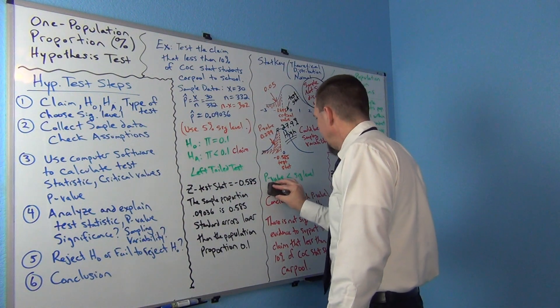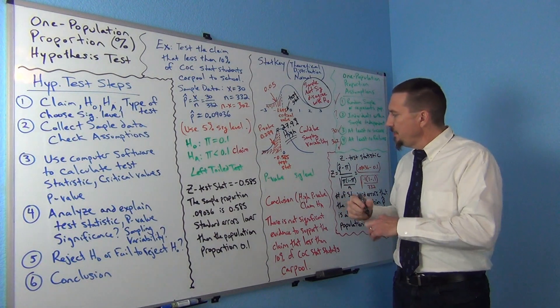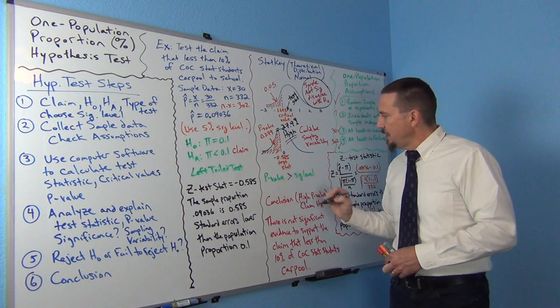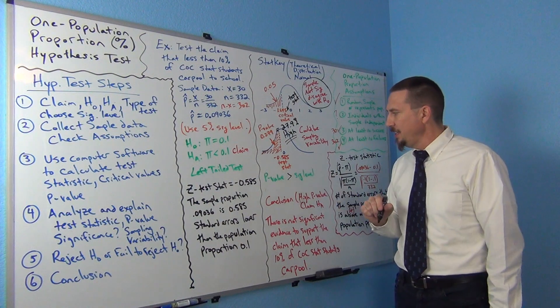Okay, so what do we see here? Our p-value is greater than our significance level, right? Greater than, not less, greater than.